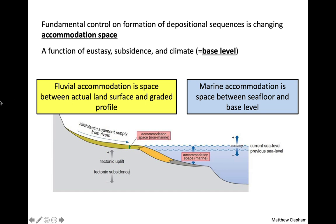There are two types of accommodation space. First, fluvial — river accommodation space. Second, marine accommodation space, which is between the sea floor and base level. For fluvial accommodation space, it's much smaller: it involves the land surface profile and the graded profile of rivers. The more siliciclastic sediment coming into an accommodation space, the more we're filling it. If we dump a lot of sand in, we raise the sea floor and reduce accommodation space without ever changing the amount of water — that's why accommodation space is what we focus on rather than water level itself.